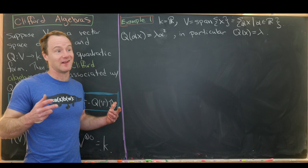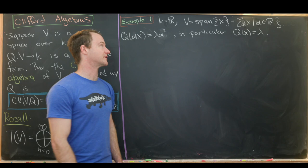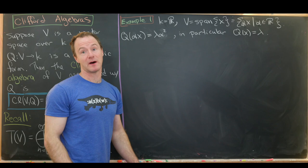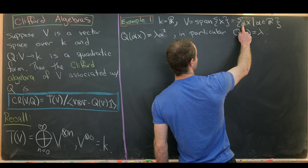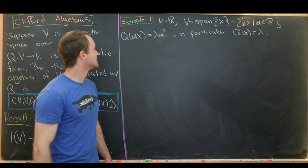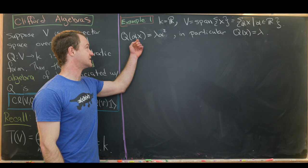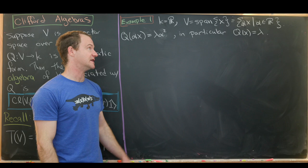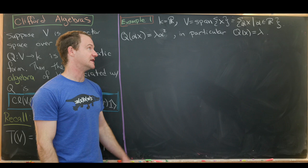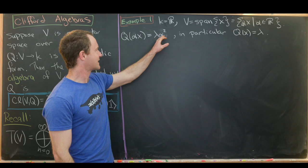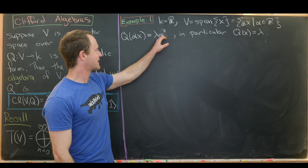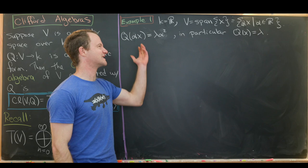For my first example, let's take our ground field to be the real numbers. Our vector space V is spanned by a single vector, which we will call x. So everything in V is an ℝ-multiple of x. When we talk about what our quadratic form is, we need to talk about what it does to an arbitrary element from V. An arbitrary element of V is a scalar multiple of x, so Q evaluated at αx is going to be α² times λ. This has to do with Q being a quadratic form, and λ is just some real number.